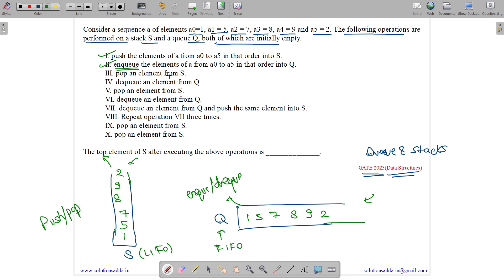Pop an element from S. So 2 will be popped out. Dequeue an element from Q. So first item which is 1 will be removed.